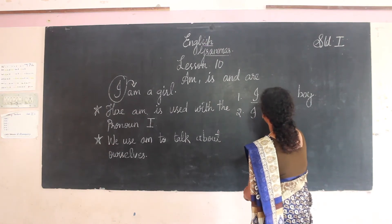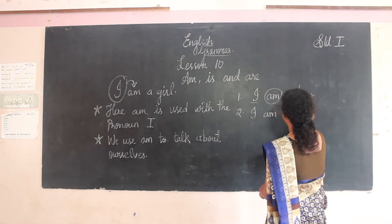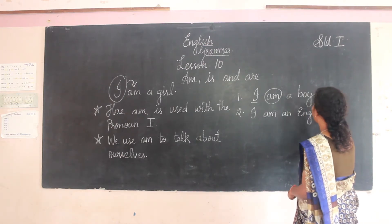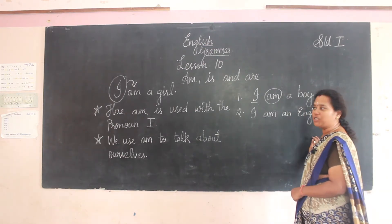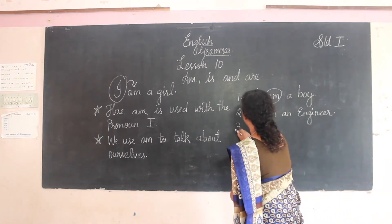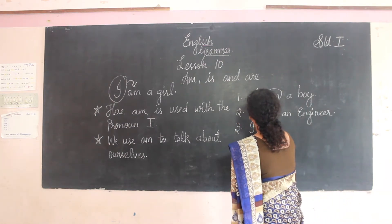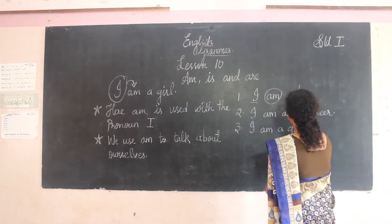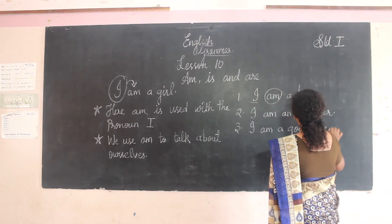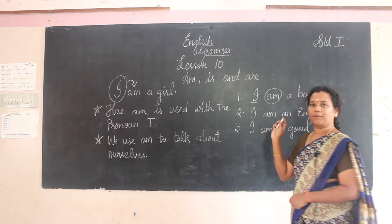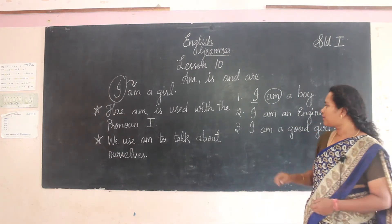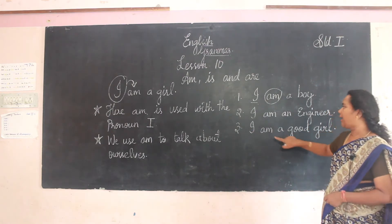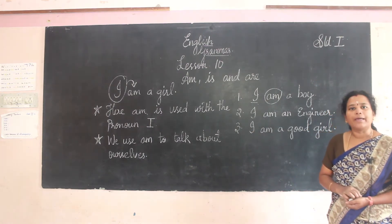Second: 'I am an engineer.' Next: 'I am a good girl.' So when we talk about ourselves, we use 'I am'.